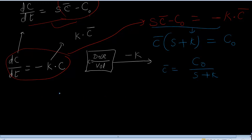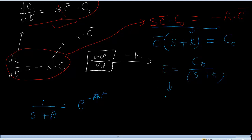Now I want to apply the inverse Laplace transform to C̄ = C₀ / (s + k). The inverse Laplace of 1/(s + a) is e^(−at), so the inverse Laplace of 1/(s + k) is e^(−kt). Therefore, C = C₀ · e^(−kt).